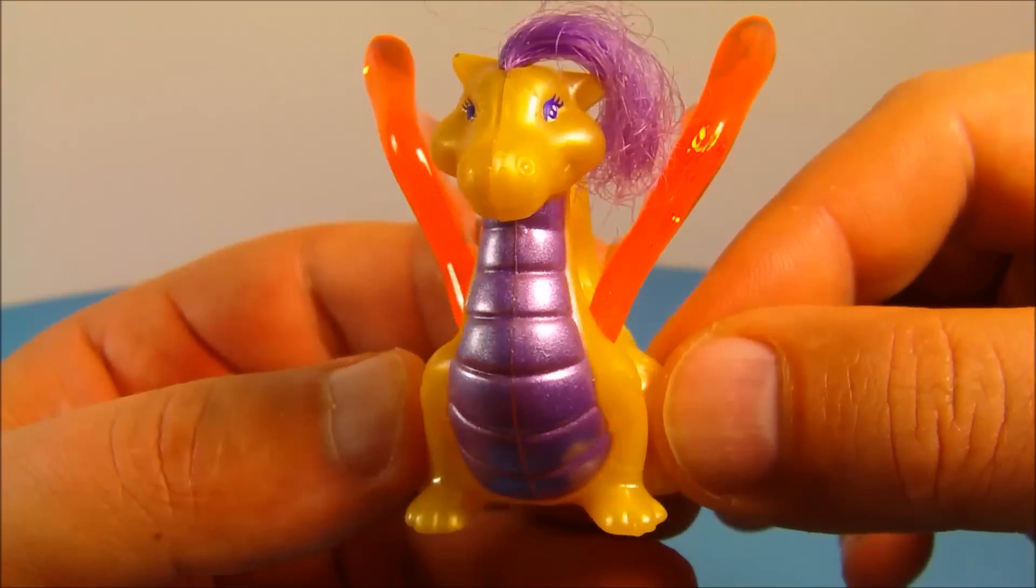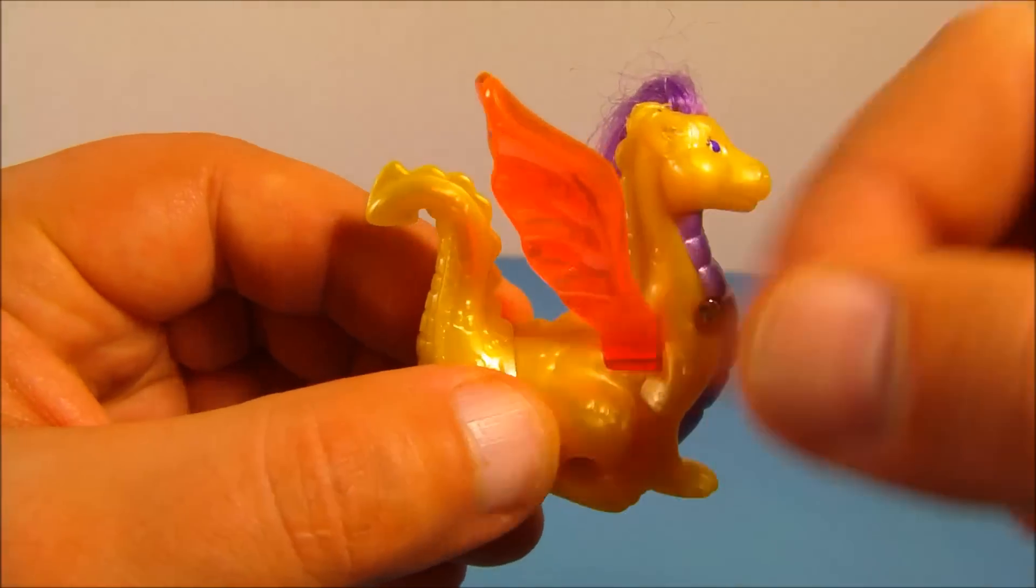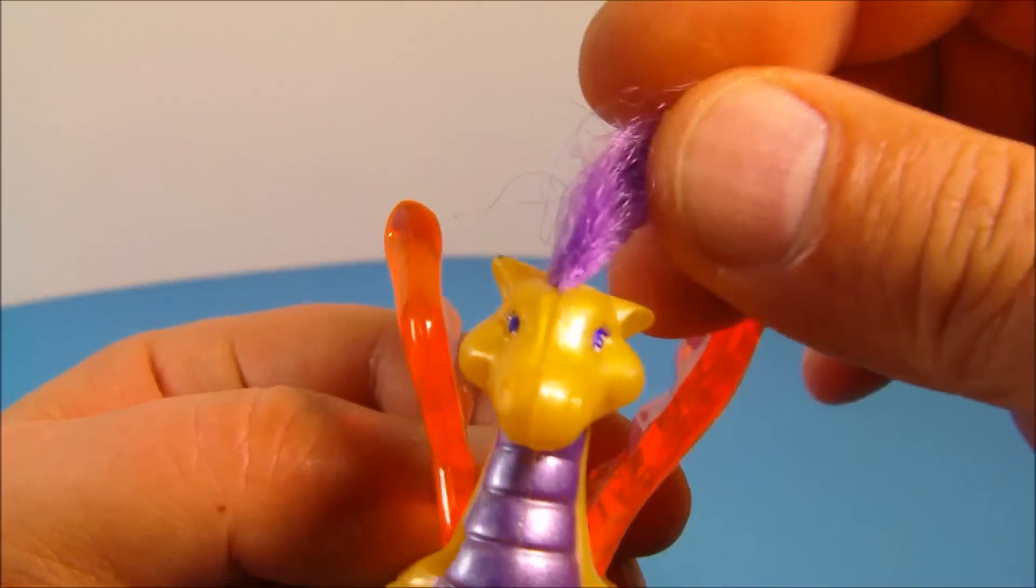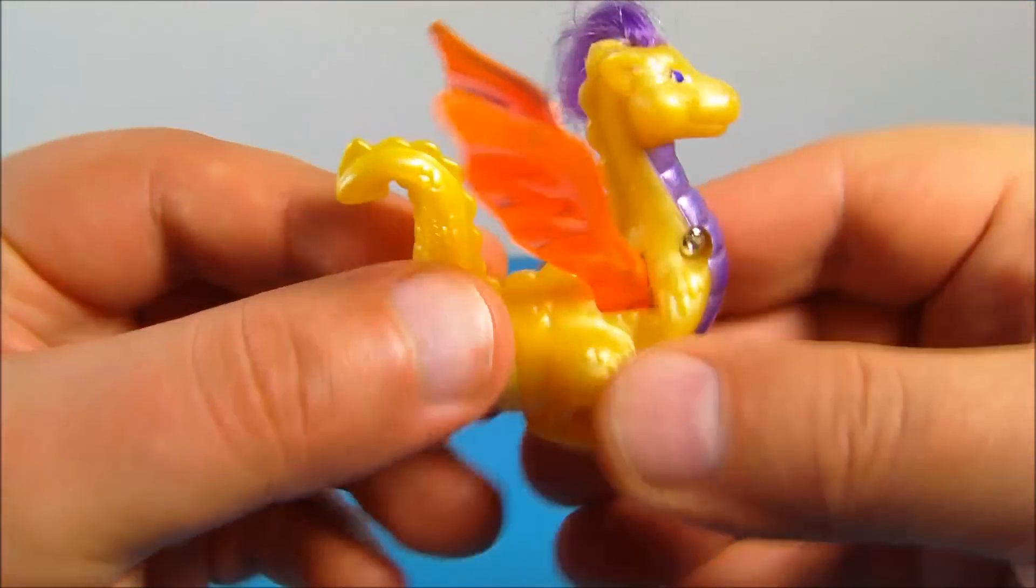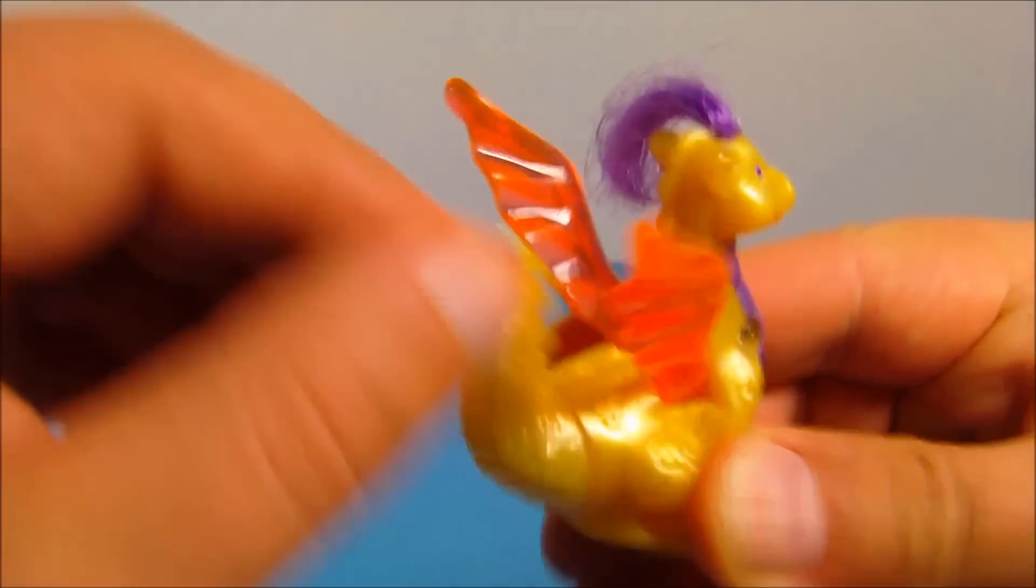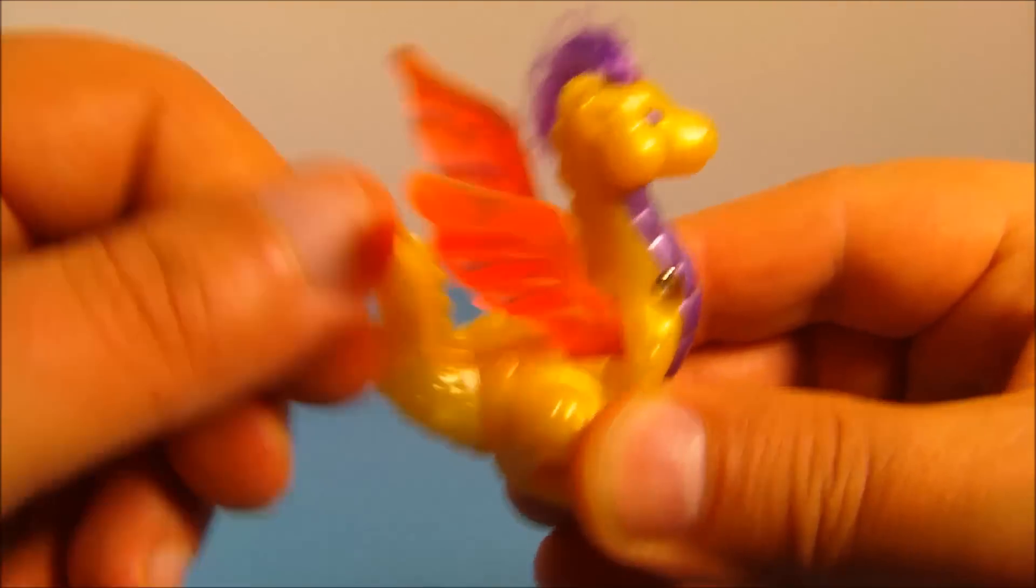Number three, we have the dragon. Look at this. This thing is just so cool. I like the clear translucent wings. Even has some real hair up here, so you can brush that or braid or whatever. Really cool, shiny purple on the chest. And on the back here, you can take his tail and spin it back and forth. And look at the wings. Flip up and down. That's so cool. Oh, man. I really dig this one.